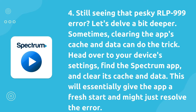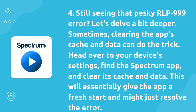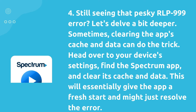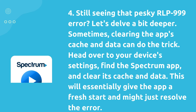Still seeing that pesky RLP 999 error? Let's delve a bit deeper. Sometimes clearing the app's cache and data can do the trick. Head over to your device's settings, find the Spectrum app, and clear its cache and data. This will essentially give the app a fresh start and might just resolve the error.